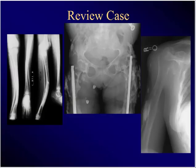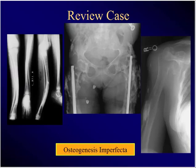We didn't talk about this — it's a basic science thing. Long gracile bones, multiple fractures, treated with pins, with some heterotopic ossification. What's the diagnosis? It's a basic science thing. OI — osteogenesis imperfecta.